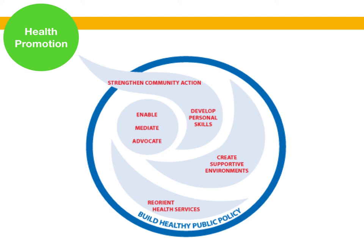Third is creating supportive environments — living and working conditions that are safe, stimulating, satisfying, and enjoyable, including the organization of work and leisure to allow people to pursue healthy lifestyle choices. Fourth is reorienting health services towards prevention, to support the needs of individuals and communities in pursuing a healthier life, and opening channels between the health sector and social, political, and environmental circumstances. All of this is part of the broader strategy of building healthy public policy across both health and non-health sectors, with the goal of reducing health inequities among different populations.